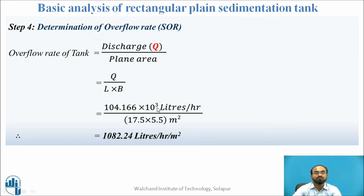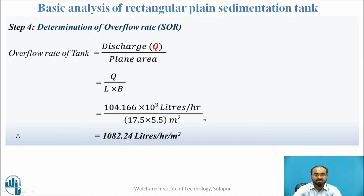For the overflow rate, the formula is Q divided by surface area (L × B). In liters per hour: SOR = (104.166 × 10³) / (17.5 × 5.5) = 1080.24 liters per hour per m². If the answer is needed in m³ per hour per m², use 104.166 directly without multiplying by 10³.